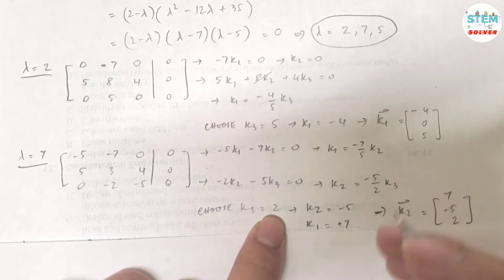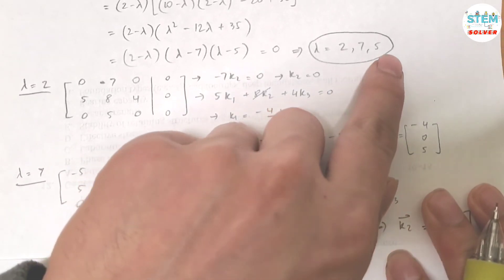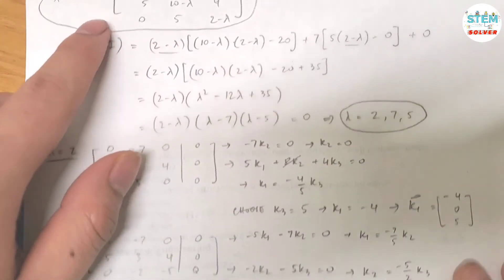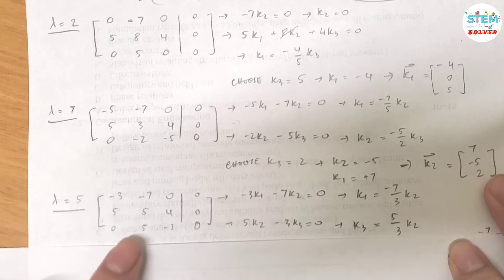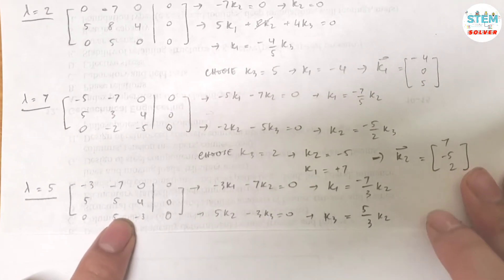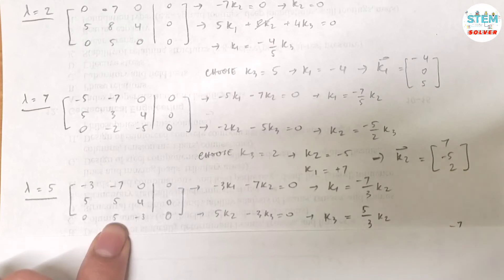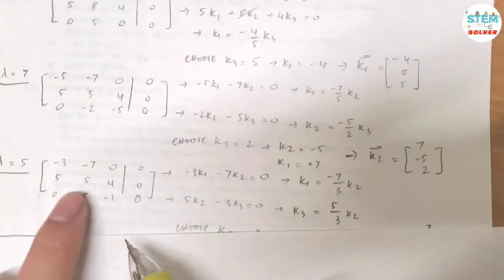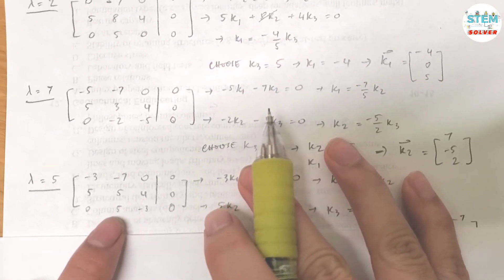Now you're going to repeat this process one more time for lambda equals 5. Plug it into this matrix, that gives you a new matrix which is this, augmented with 0. Now look for the equation you are going to use. So it's kind of similar to this one. Right, first use the first equation.